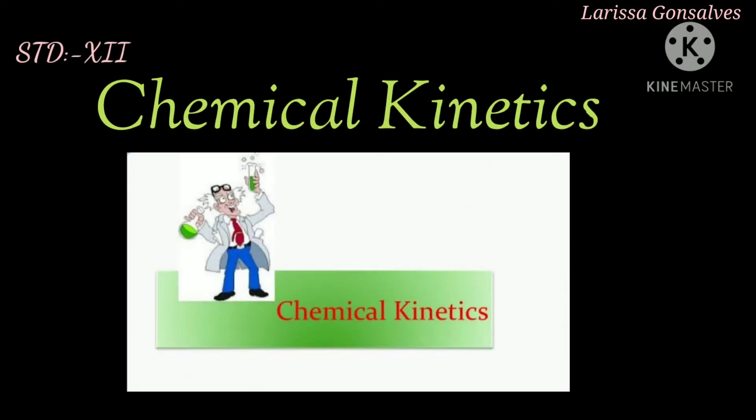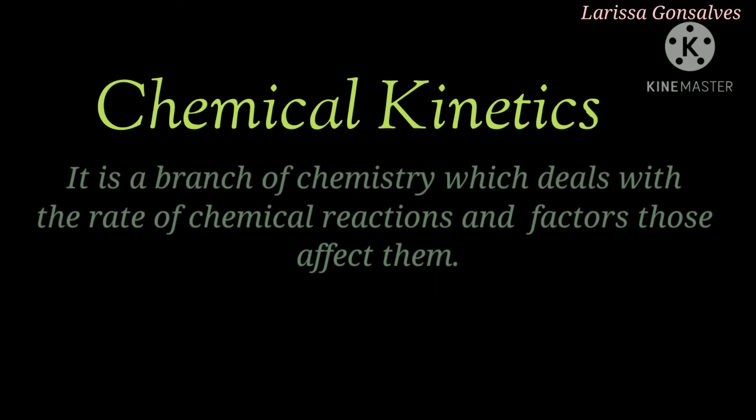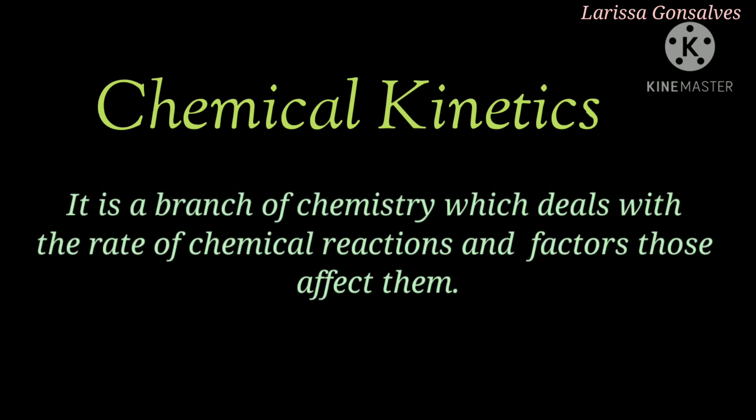We are starting with a new chapter: chemical kinetics. Chemical kinetics is a branch of chemistry which deals with the rate of chemical reaction and the factors affecting the rate of a reaction. A chemist is always eager to know the rate of a reaction for many different reasons. By studying the rate of reaction, it helps to predict how fast the chemical reaction is going to attain its equilibrium. It also gives information regarding the mechanism of the chemical reaction.